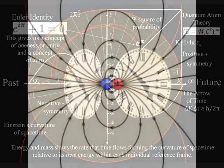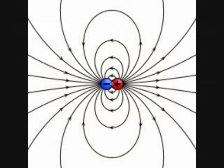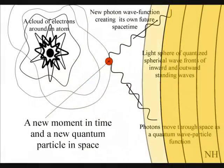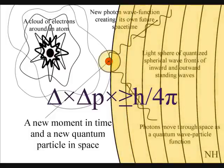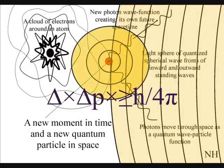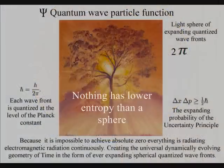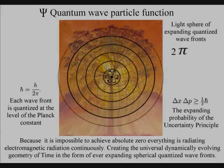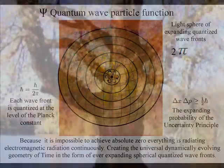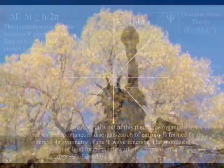Where some theories see disunity, disharmony and chaos, this theory sees oneness, unity and harmonics that can only be formed by one universal process of spherical symmetry forming and breaking. Disorganization is formed by the quantum wave particle function or probability function having spherical symmetry. As the energy levels cascade down, it forms greater degrees of freedom for the disorganization of entropy that we have in the second law of thermodynamics.